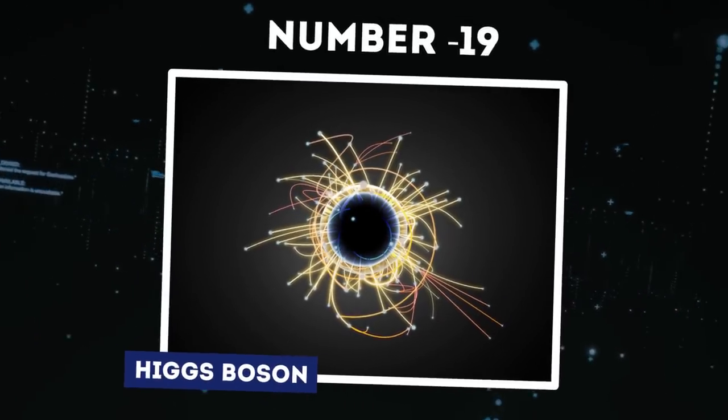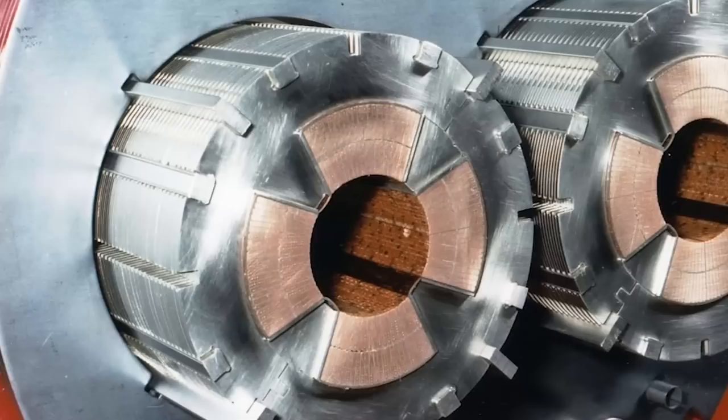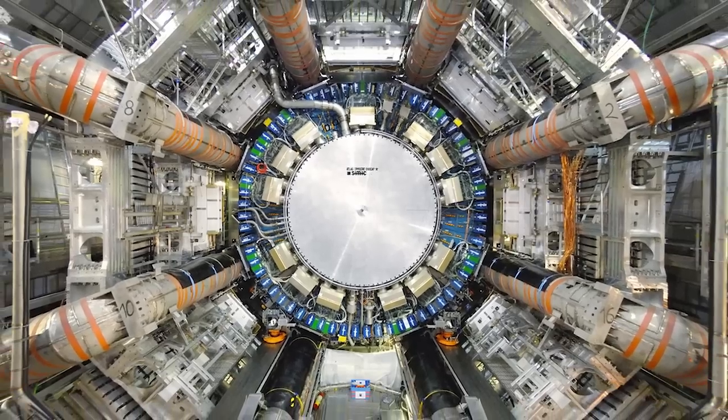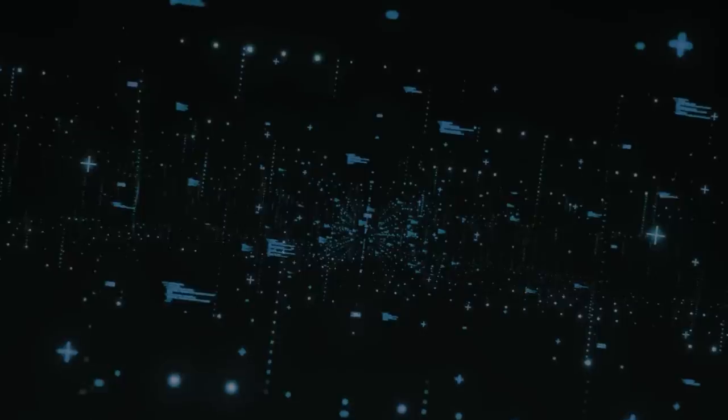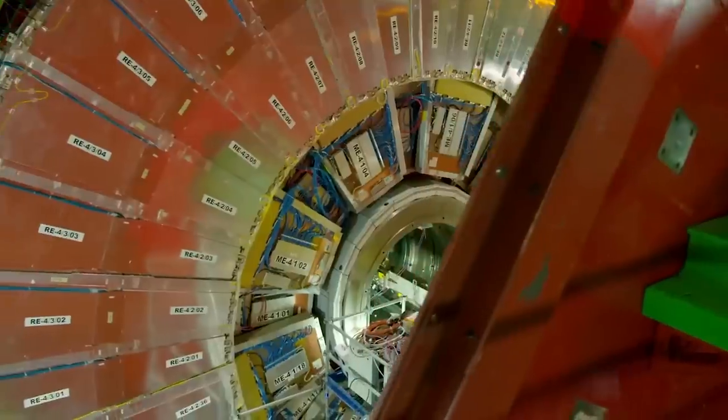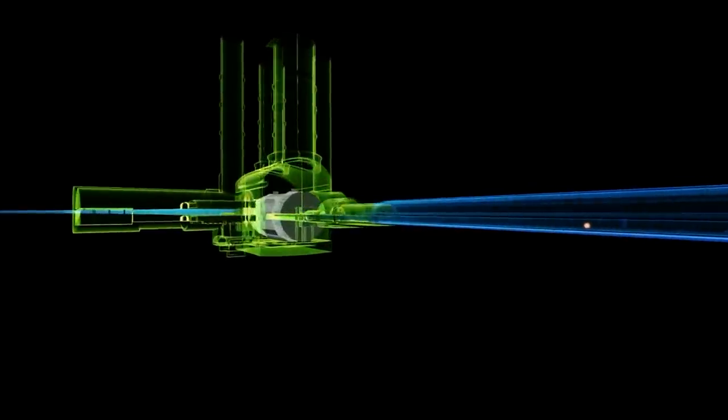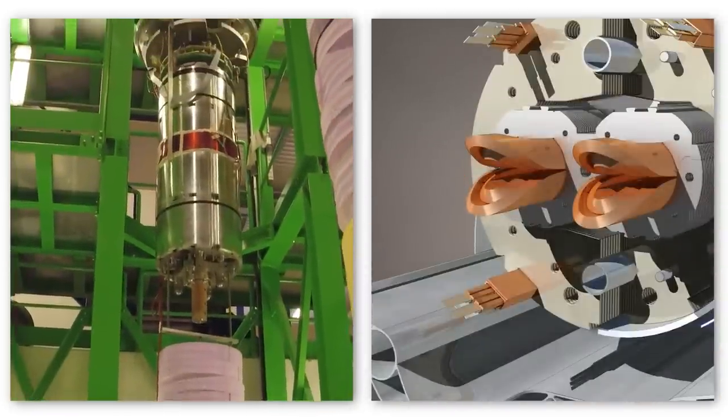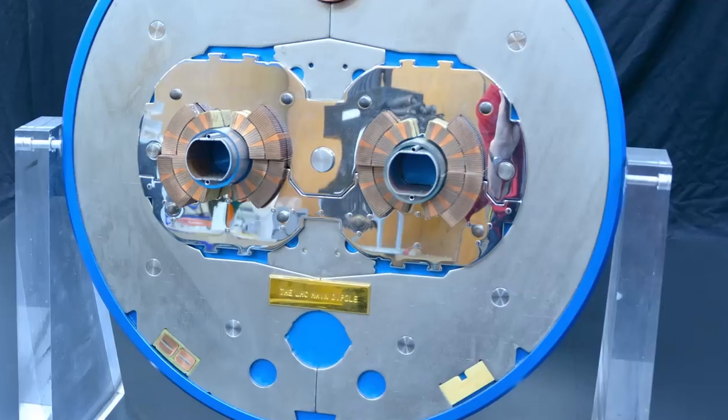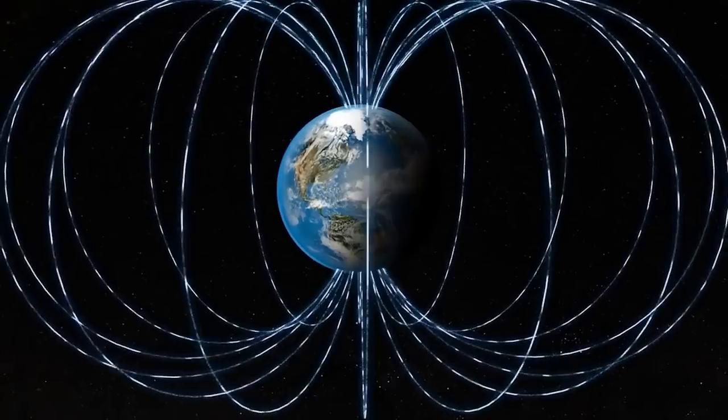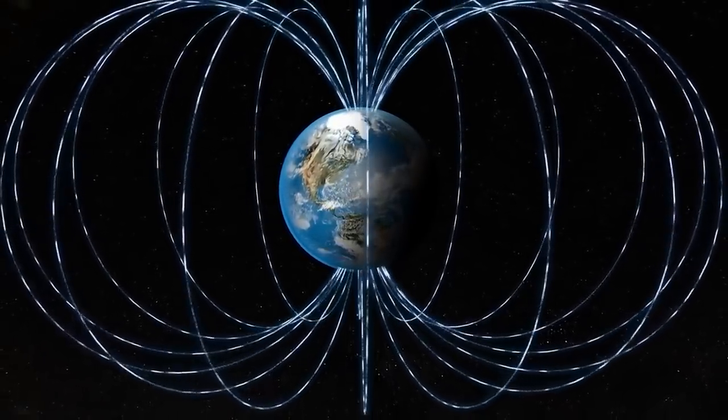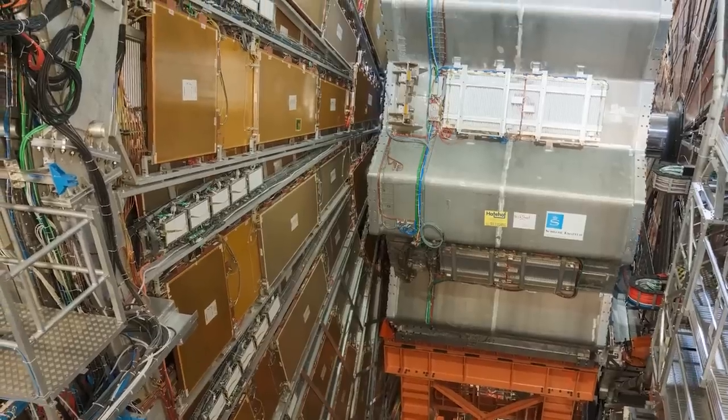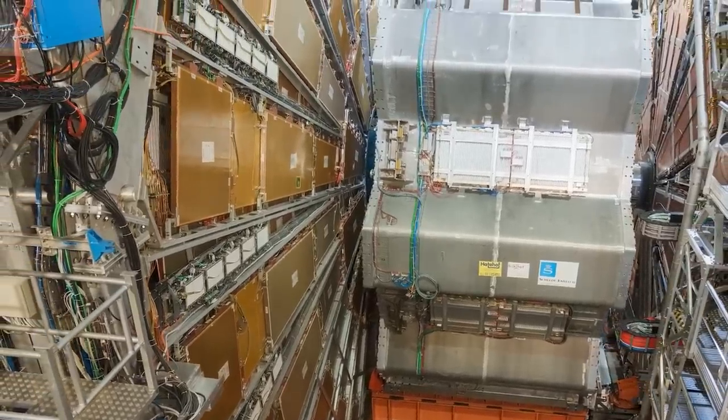Number 19. Higgs Boson. The construction of LHC involved thousands of magnets, cryogenic systems, vacuum chambers and detectors. The superconducting electromagnets contain 1232 dipole magnets, 15 meters in length, that steer two beams containing protons in opposite directions. These magnets operate at minus 271 degrees Celsius and generate magnetic fields over 100,000 times stronger than the Earth's. The magnets are cooled to operating temperature using over 80 tons of liquid helium, making the LHC the largest cryogenic facility ever built.